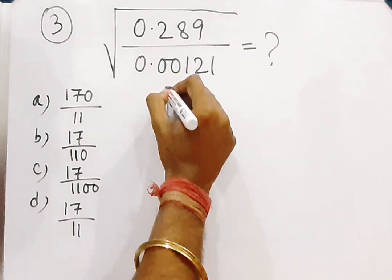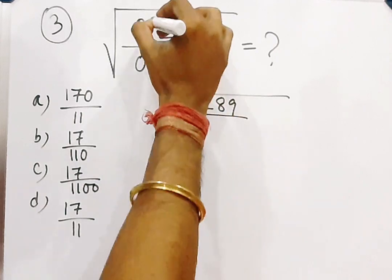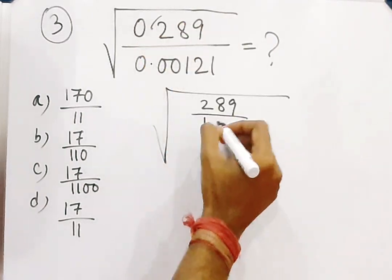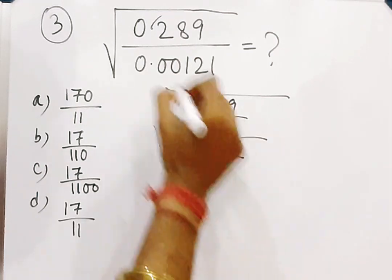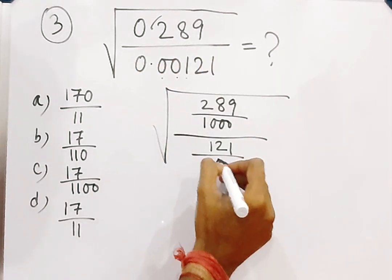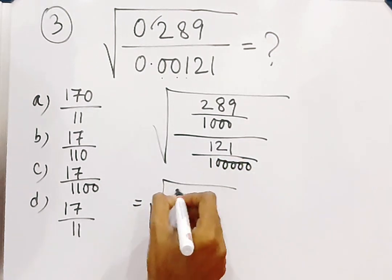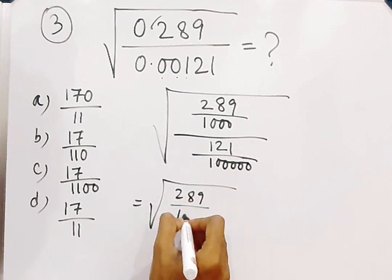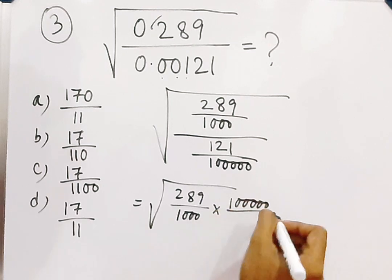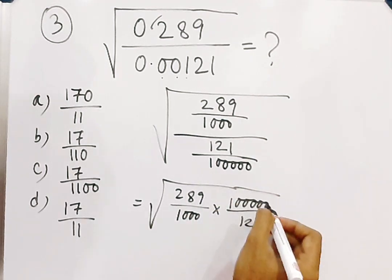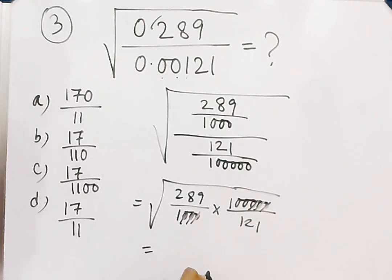Next question is square root of 0.289 by 0.00121 equal to question mark. For 0.289, there are three digits after the decimal, so it becomes 289 by 1000. For 0.00121, there are five digits, so it becomes 121 by 100000. Now we have root of 289/1000 divided by 121/100000, and the zeros cancel.